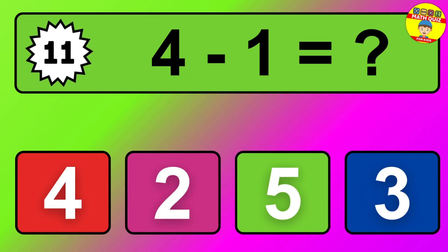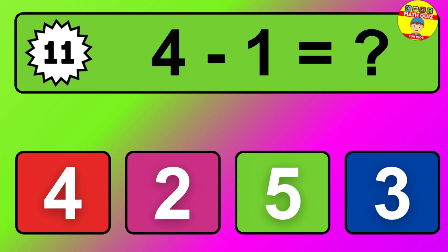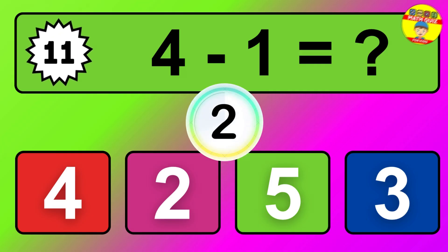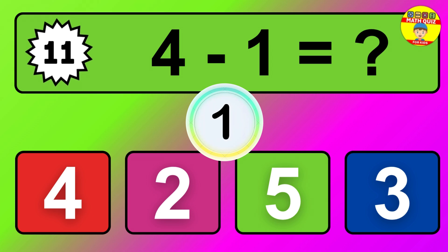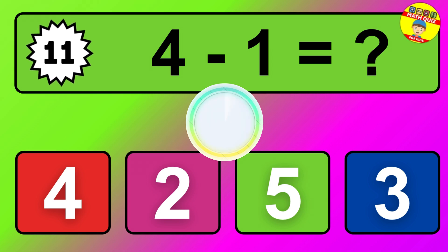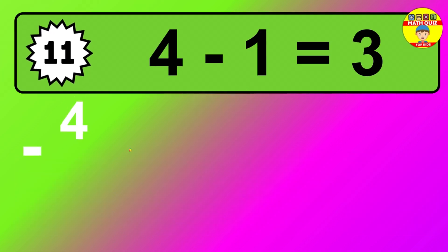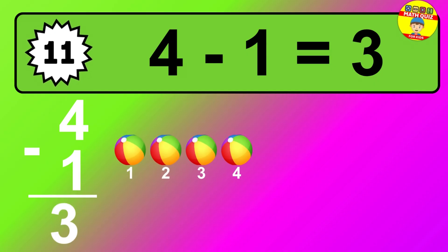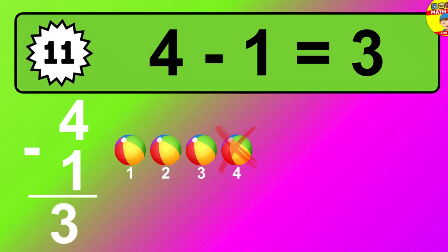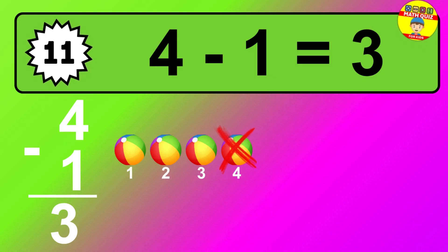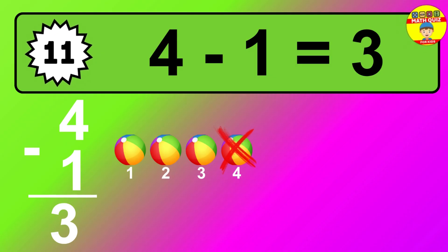Question 11. 4 minus 1 equals what? The answer is 4 minus 1 is 3. Let's count it: 1, 2, 3.